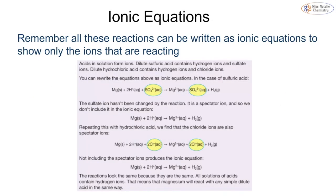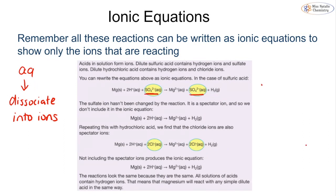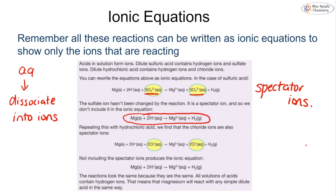We can write all of these equations as ionic equations by only showing the ions that are reacting. If a substance is aqueous, it can dissociate into its ions. We can then identify the spectator ions — in the case of sulfuric acid, the sulfate ions are spectating. We remove the spectator ions to get the full ionic equation. For hydrochloric acid, we remove the chloride as the spectator ions, and again we get the ionic equation showing only the species that are actually reacting.